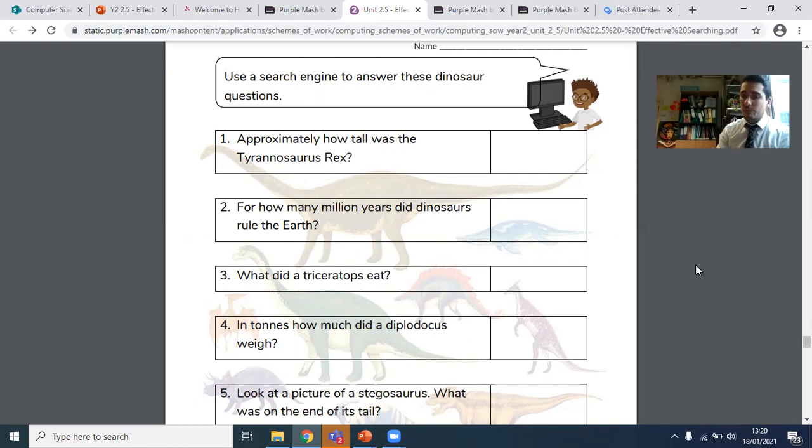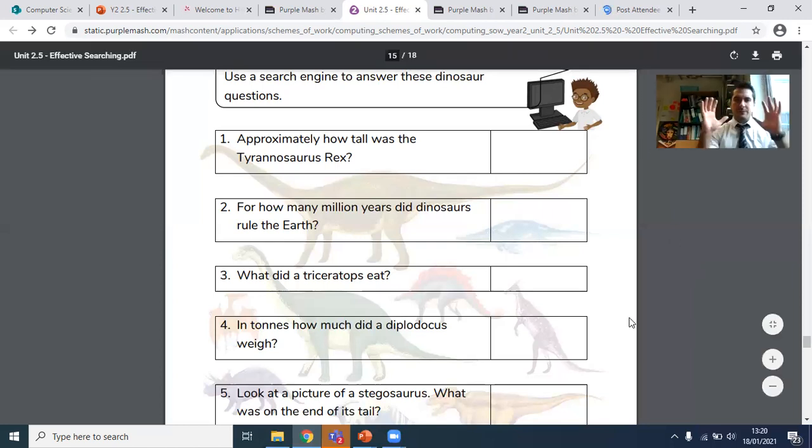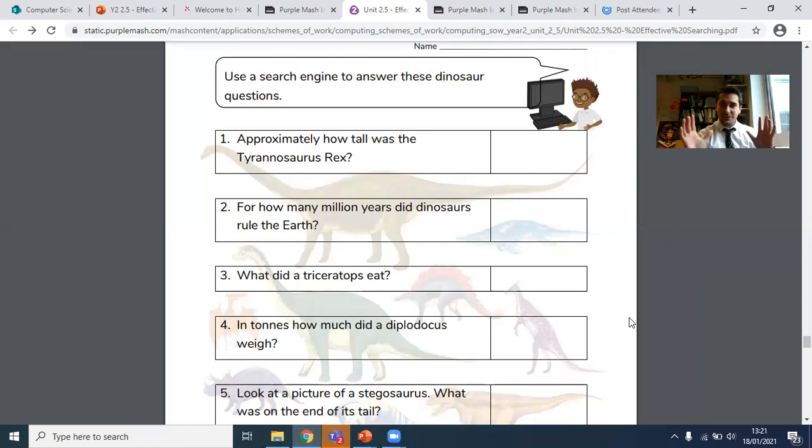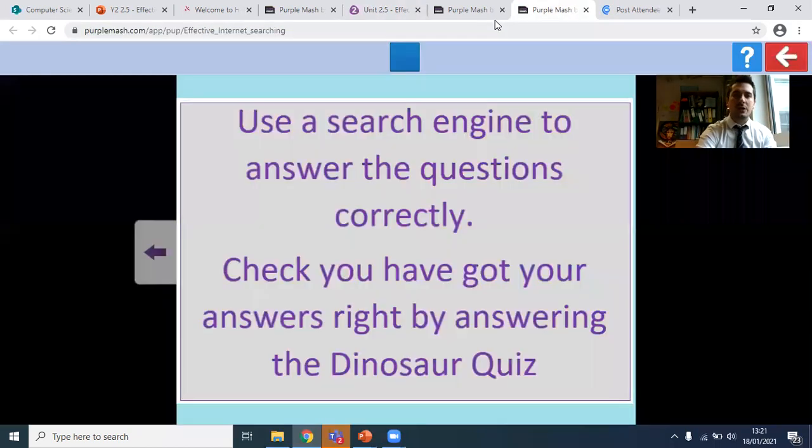Now, if you can find information on these questions and write them down, you'll do really well at the quiz. So if you want to pause this screen, go off, use your search engine, find the information, and then come back, and you can then complete the quiz. Do that for me now. Did you do it? Did you go off? Did you find this information? Once you've found the information, go to the dinosaur quiz.